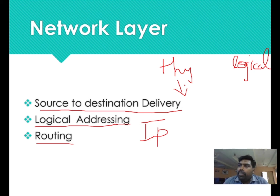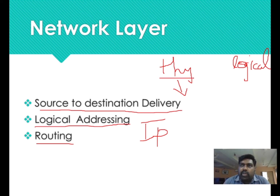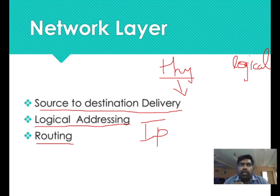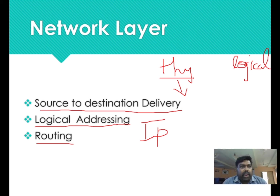Physical layer path is different for data. Source to destination delivery supports all these important features. If you have a physical address, you can use a physical address. For example, CSE department and ECE department — if you have a physical address, you can use a physical address for local communication.